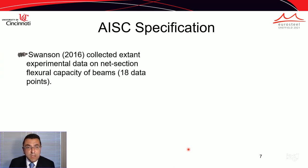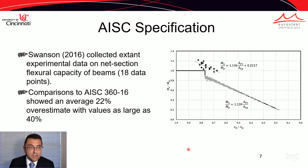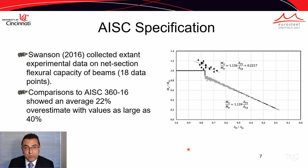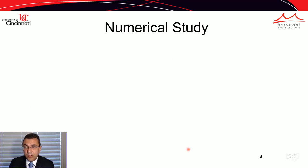In 2016, Swanson collected all existing experimental data on flexural capacity of beams — 18 data points total. His comparison to AISC 360-2016 showed an average 22% overestimate of the provisions with respect to experimental data, with values of overestimation as large as 40%. That's where our work comes in.